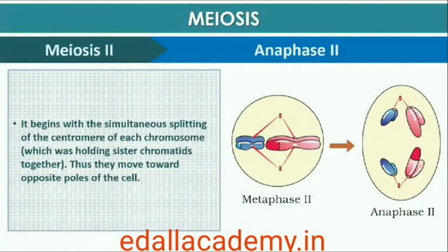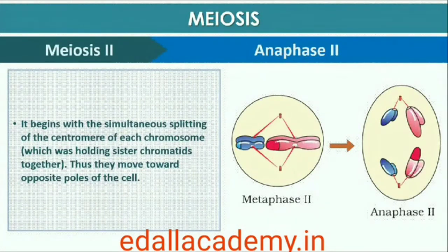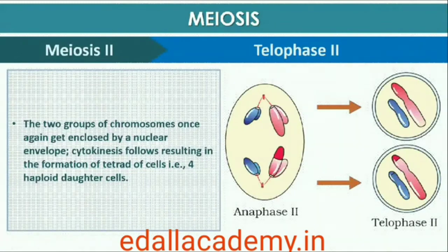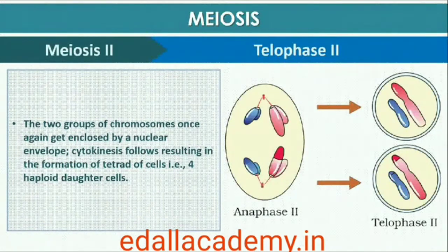Anaphase II begins with the simultaneous splitting of the centromere of each chromosome, which was holding the sister chromatids together, allowing them to move toward opposite poles of the cell. Meiosis ends with Telophase II, in which the two groups of chromosomes once again get enclosed by a nuclear envelope. Cytokinesis follows, resulting in the formation of a tetrad of cells — that is, four haploid daughter cells.